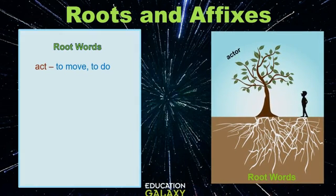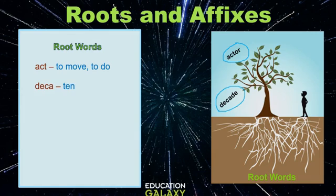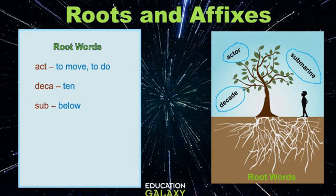Act means to move or to do, and from this you have the word actor. Another root word is deca. Deca means 10 and we can form a new word, decade, which means a period of 10 years. Sub is another root word — it means below, and on our word tree we have the word submarine. Then we have tele, which means far, and the word that has appeared on our word tree is telescope.